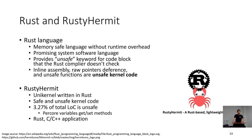RustyHermit is a unikernel written in Rust. It has safe and unsafe kernel code. Its unsafe kernel code is 3.27% of the total lines of code, and its per-core variables' get and set methods can be safety-critical because they can access an arbitrary memory address. Interestingly, RustyHermit can run Rust, C, or C++ applications, unlike other unikernels.